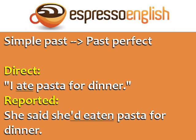Simple past verbs become past perfect. Direct: 'I ate pasta for dinner.' Reported: 'She said she'd eaten pasta for dinner.'